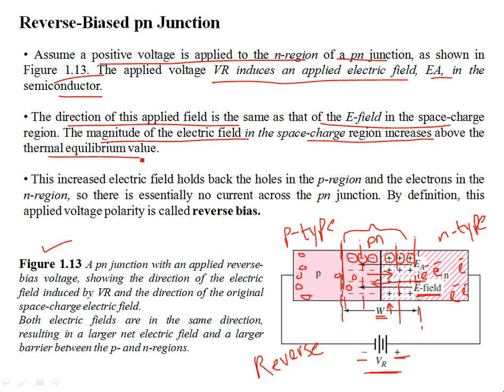A time comes when the diffusion process stops and the E-field balances out the diffusion process — we had thermal equilibrium. Now thermal equilibrium is disturbed because of the external bias, and as a result the E-field tends to be stronger than before, resulting in widening of the depletion width. This holds back the holes in the P-region and the electrons in the N-region — the majority carriers in both regions.